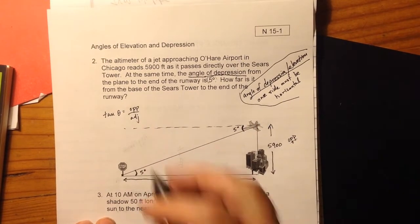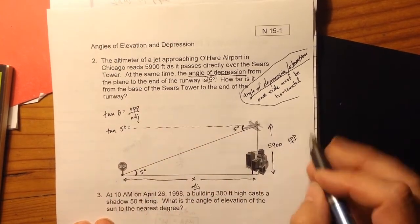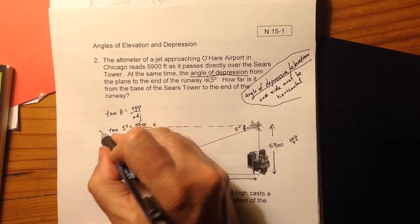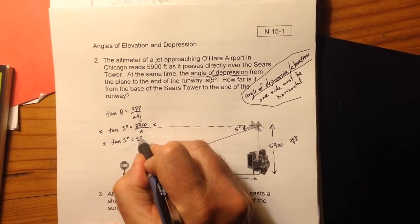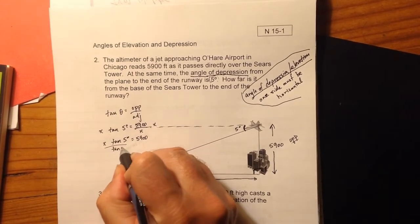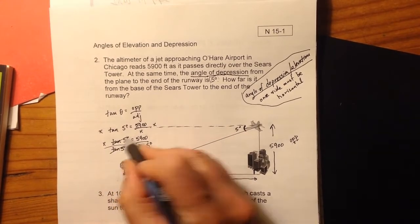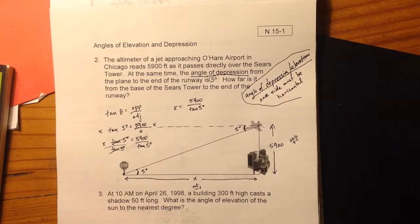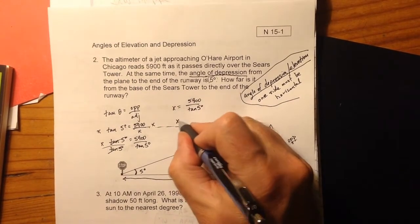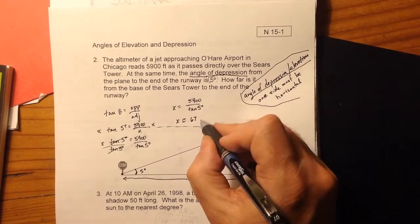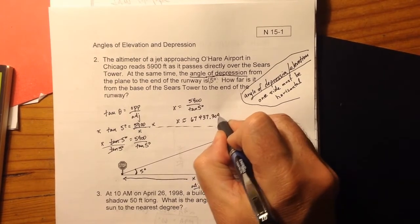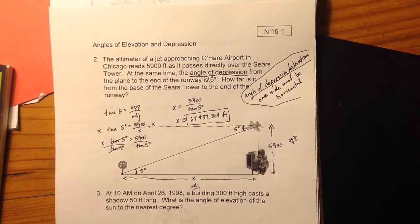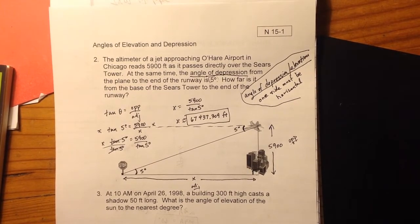So just plugging in our numbers here, we would say tan of 5 degrees is equal to 5,900 divided by x. I'm going to solve this for x. I'm going to first multiply both sides by x. I've got x times tan 5 degrees equals 5,900. And then I'm going to divide both sides by tan 5 degrees. And I get that x equals 5,900 divided by tan 5 degrees. Plug that in, and I get that x is approximately, we're going to round to three decimals, 67,437.309. And we're talking about feet here. 67,437.309 feet.